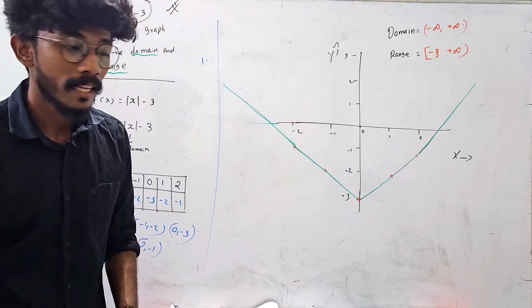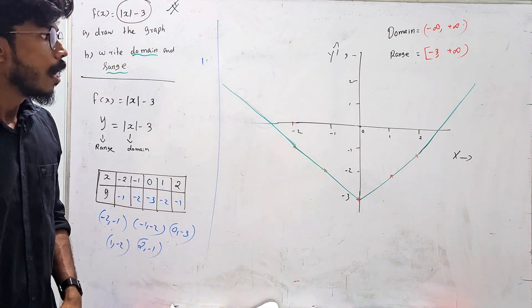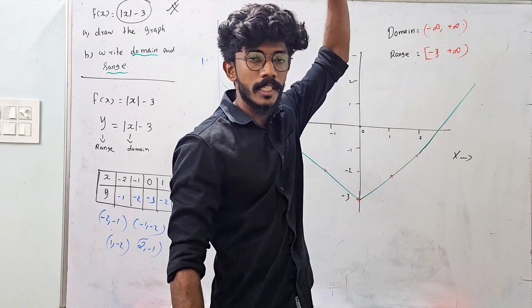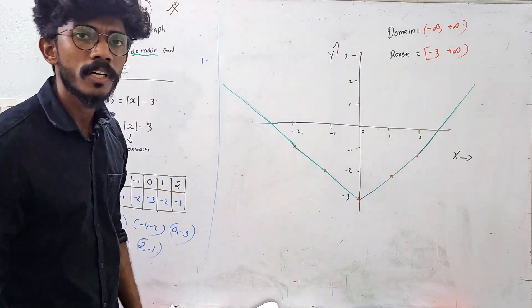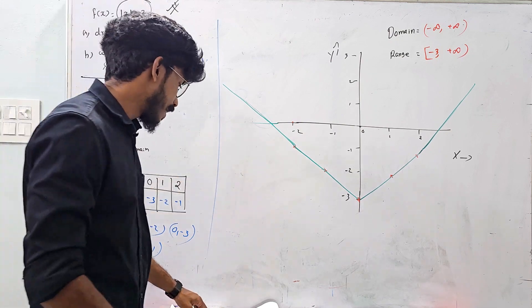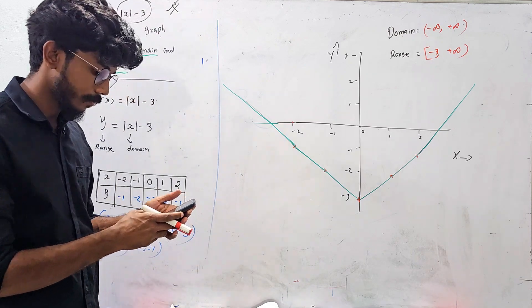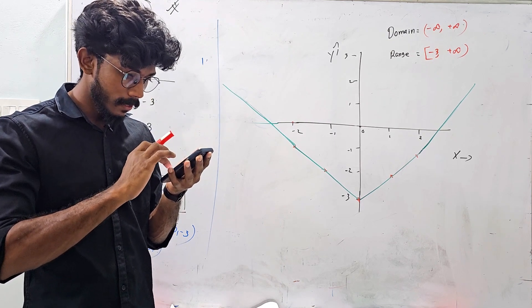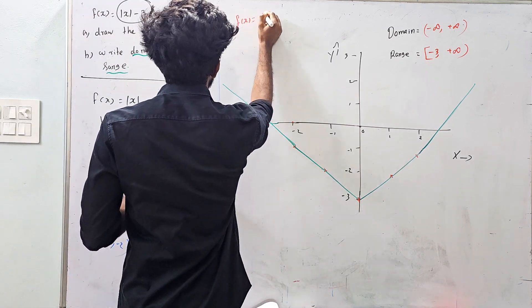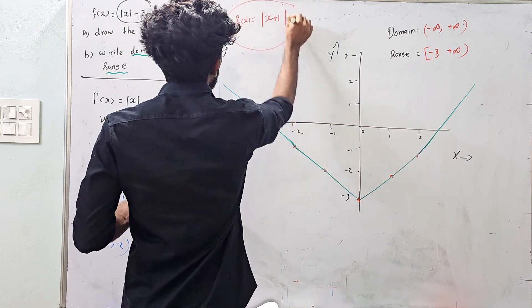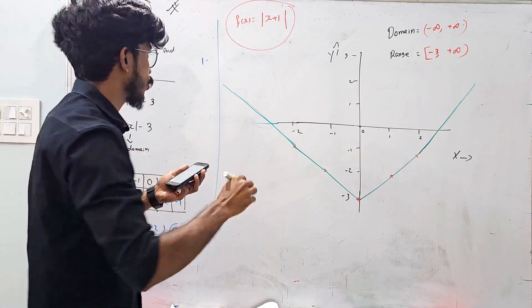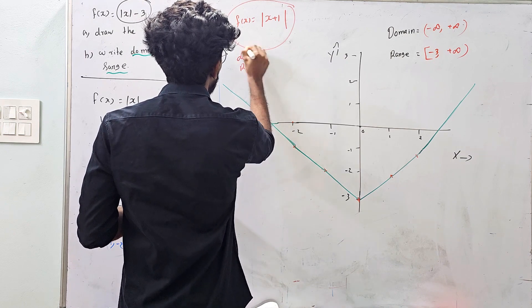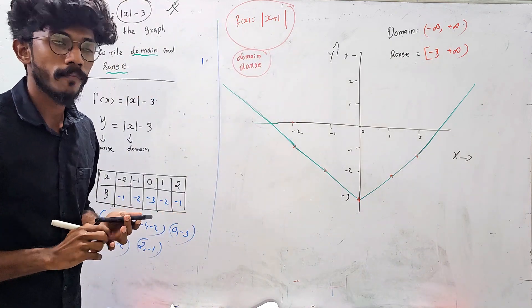The x values are called the domain and the y values are called the range. If you ask this question: f of x equal to mod x plus 1 — that is the domain and range question.